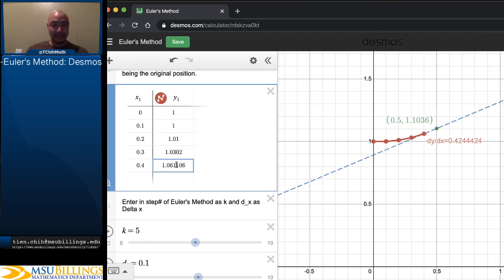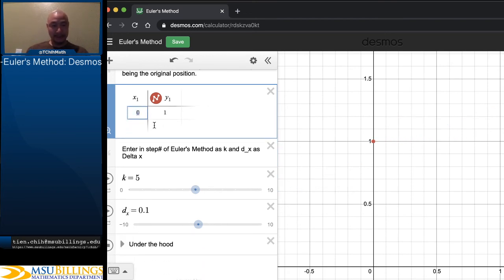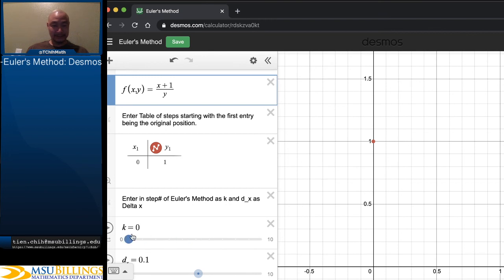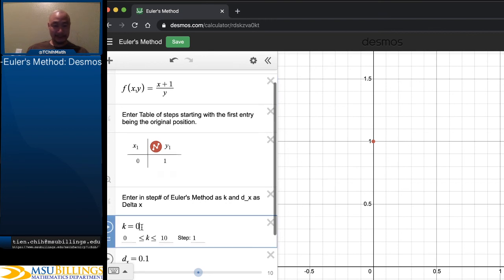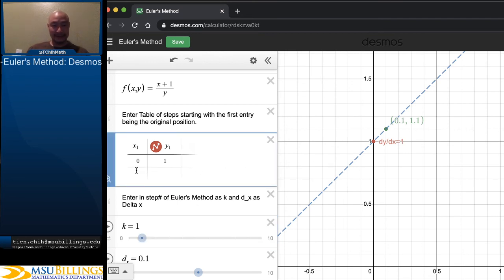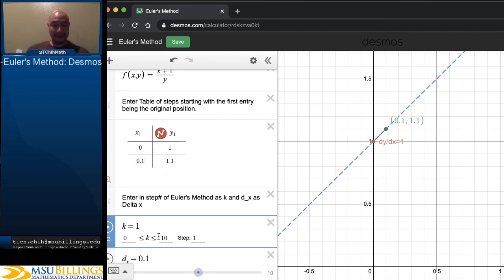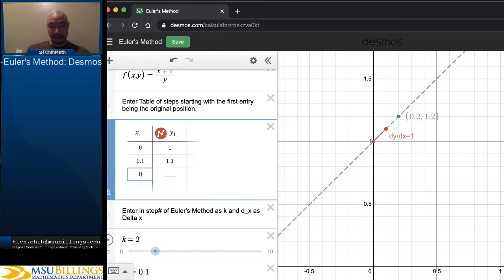So, alright, let's do another quick example, maybe (x+1)/y. At step 1, that brings us to (0.1, 1.1). At step 2, (0.2, 1.2).